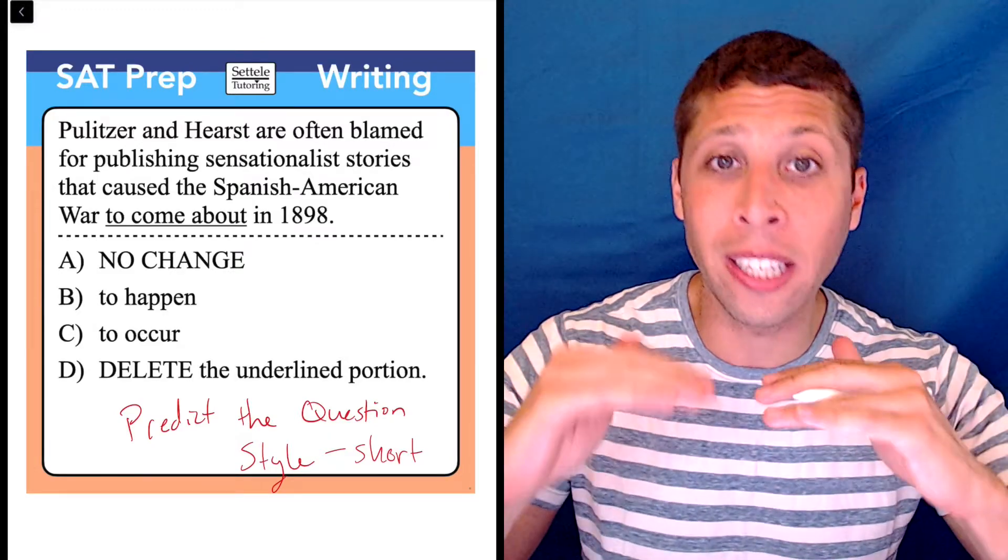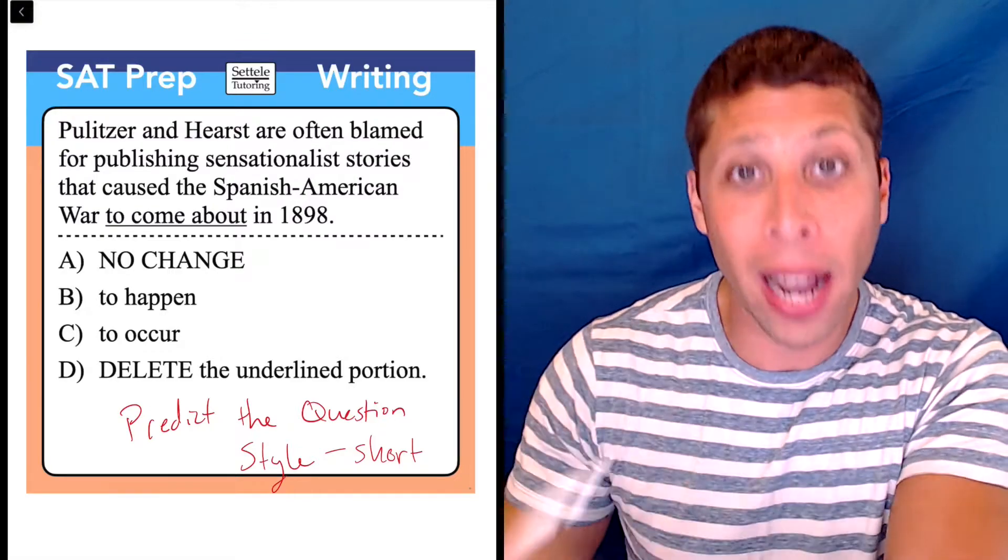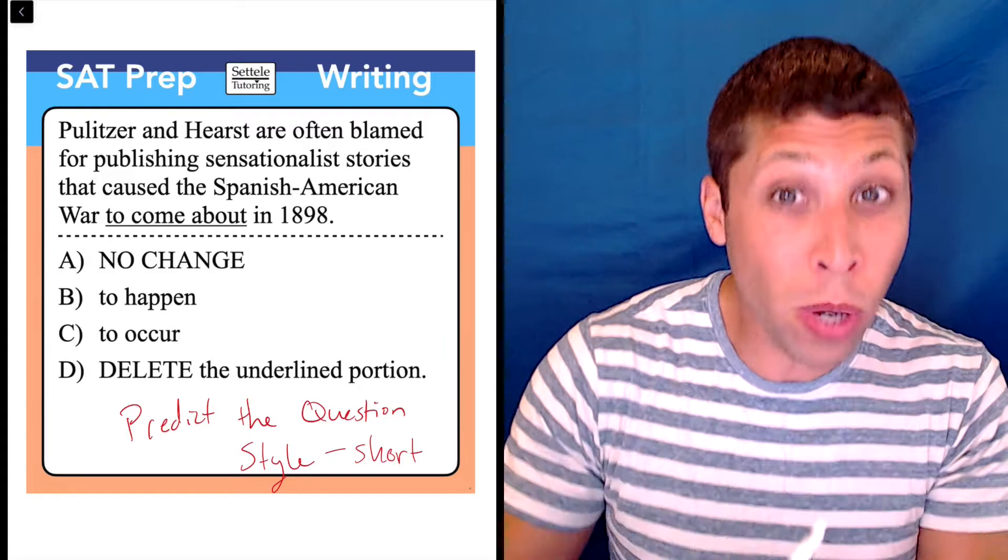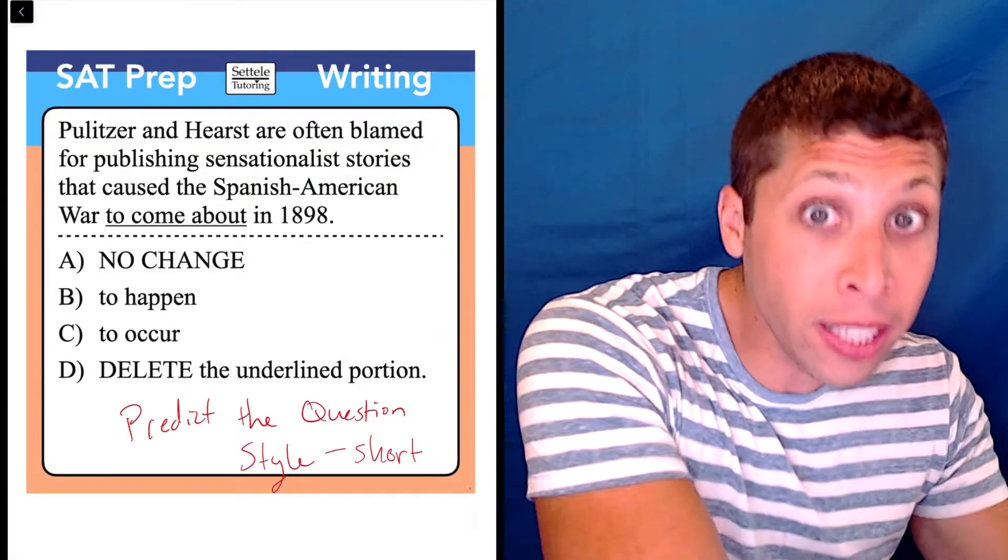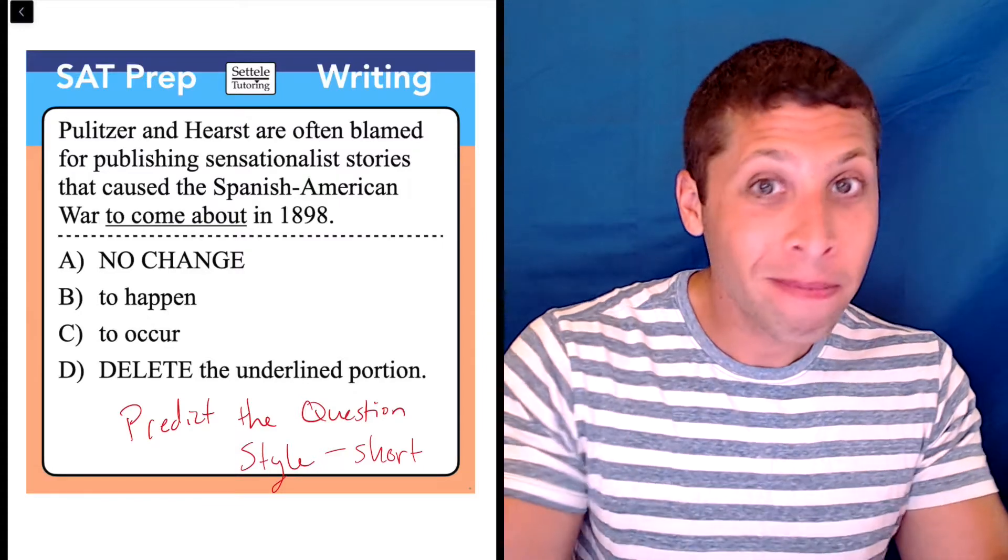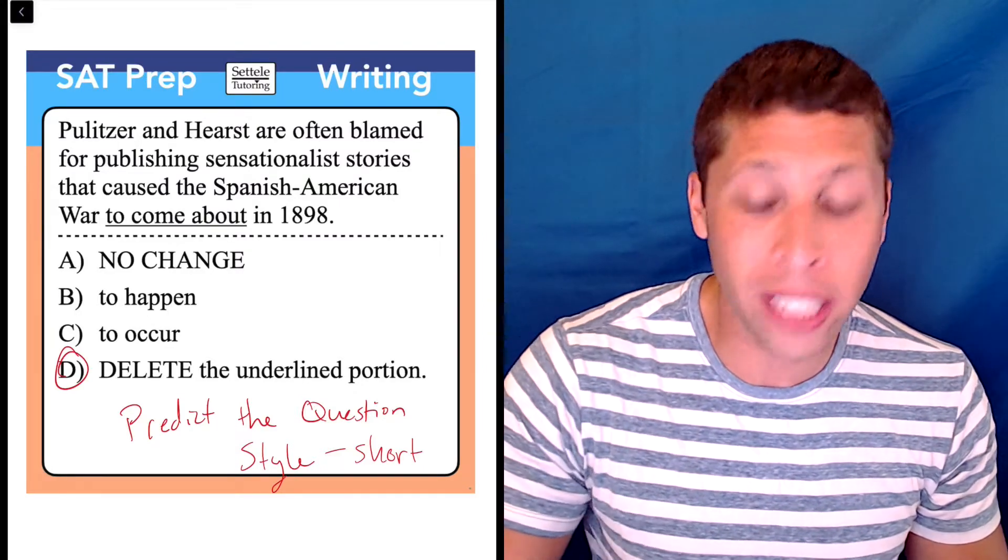All of that is beyond what is tested on the SAT. We know the rules that the SAT is abiding by. They like shorter choices. Unless you have a really, really, really good reason to put words here, the default move should be to delete them. That's the answer, choice D. We don't need any of this.